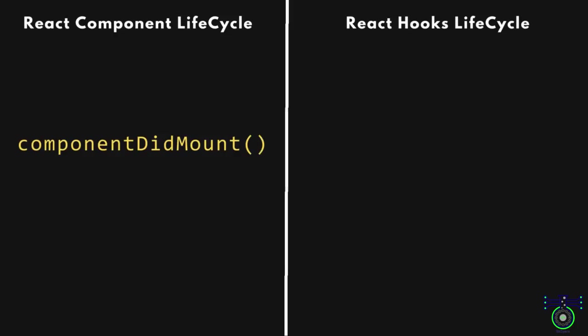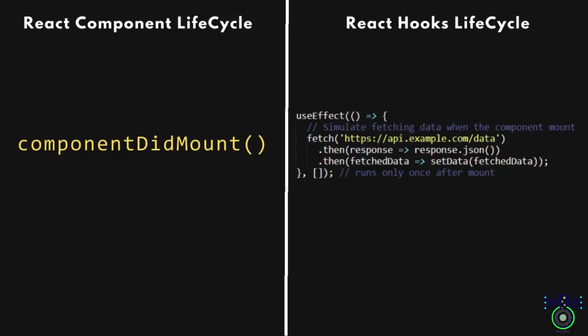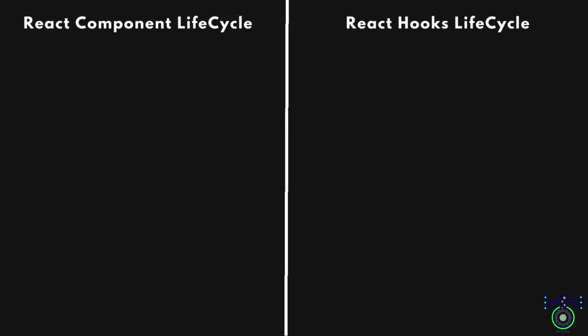Next we have the componentDidMount method equivalent using the useEffect hook. Inside the useEffect block there is a simulation of data fetching — it simulates a network request by fetching data from a dummy API call at api.example.com using the fetch API. The fetched data is then processed using promises and setData is called to update the component state. The empty dependency array in useEffect ensures the effect runs only once after the initial mount, mimicking the behavior of componentDidMount in class components.